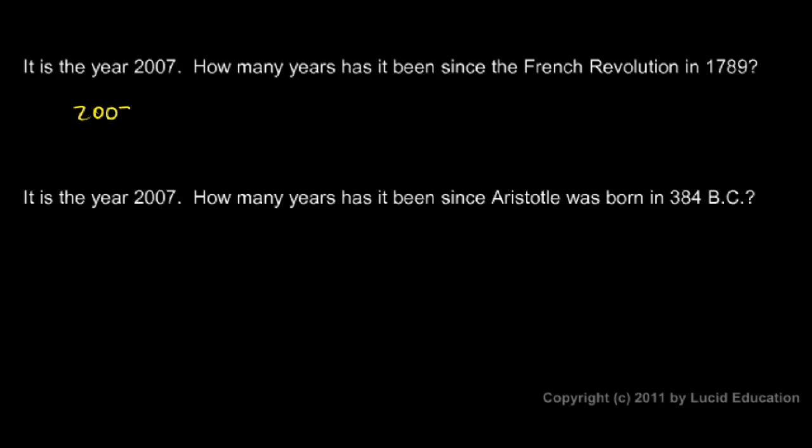So we do 2007 minus 1789. And we could rewrite that as 2007 plus the opposite of 1789.